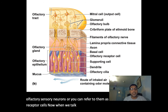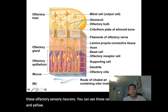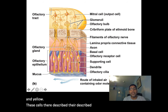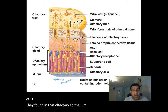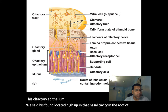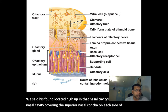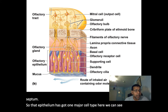The olfactory receptor cells, or olfactory sensory neurons, are described as bowling pin-shaped cells found in the olfactory epithelium, which is located high up in the nasal cavity — in the roof of the nasal cavity, covering the superior nasal conchae on each side of the nasal septum.